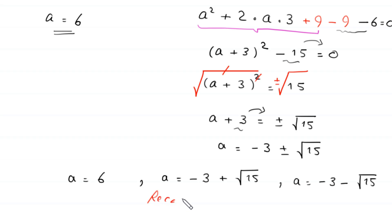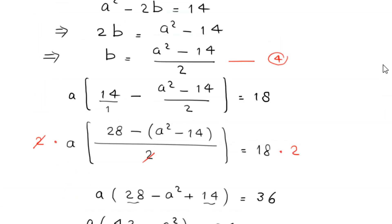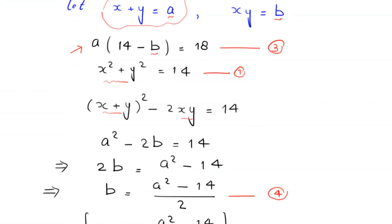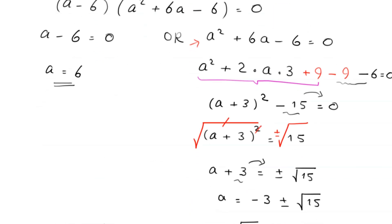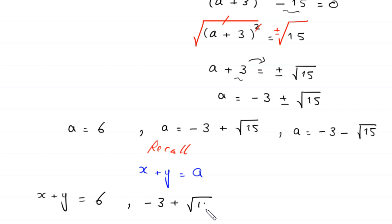Recalling that we set x plus y equal to a, we get three values of x plus y: x plus y equals 6, x plus y equals negative 3 plus root 15, and x plus y equals negative 3 minus root 15. These are the three solutions of this system of equations.